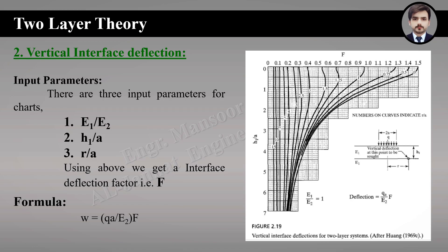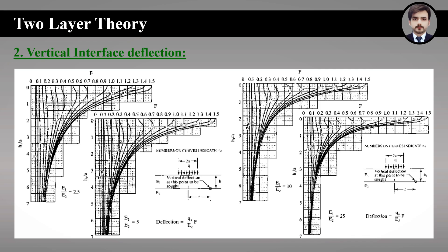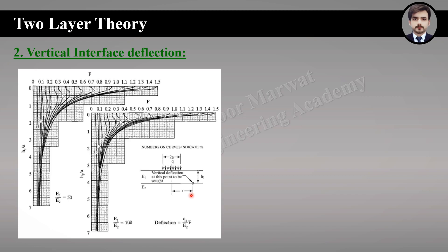Separate figures exist for modulus ratios of 2.5, 5, 10, 25, and 100. We use the figure corresponding to our modulus ratio. For example, assuming a modulus ratio of 50, we use the appropriate figure. One input parameter is the thickness-to-radius ratio h1/a — assume it equals 1. We also identify the line on the figure indicating r/a. From h1/a = 1, move straight towards the relevant r/a line, then from that intersecting point move straight upward to get the required deflection factor F.